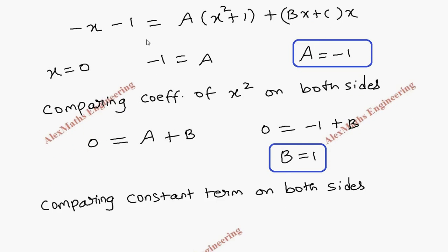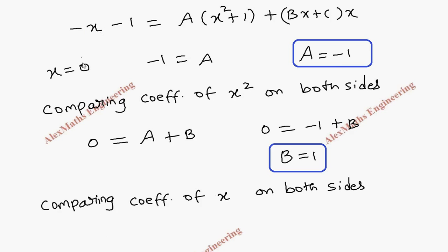Now for the constant C, let's compare the coefficient of x on both sides. On the left-hand side the coefficient of x is minus 1. On the right-hand side, expanding (Bx plus C) times x gives Bx² plus Cx, so the coefficient of x is C. Therefore C equals minus 1.